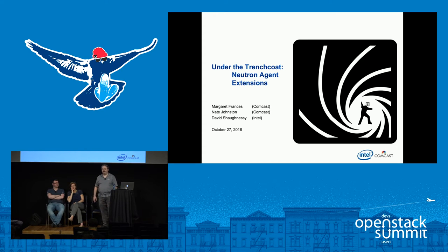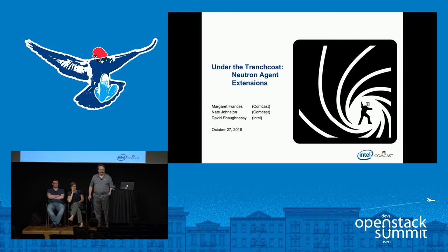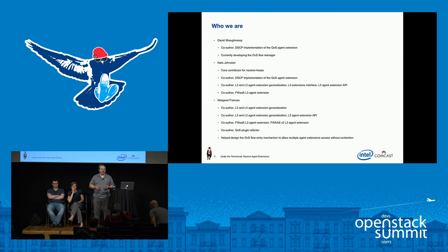Thank you for coming to our talk 'Under the Trench Coat: Neutron Agent Extensions.' My name is Nate Johnston, I work for Comcast. This is my colleague Margaret Francis, who also works for Comcast, and David Shaughnessy who works for Intel. All three of us are neutron contributors.